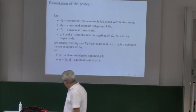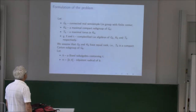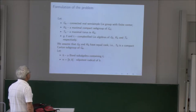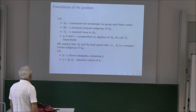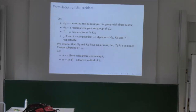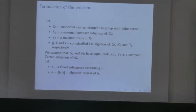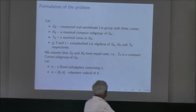Let me start by explaining the notation. For me, G-naught will be a connected real semi-simple Lie group with finite center, and K-naught is the maximal compact subgroup of G-naught. K-naught will be fixed for us. And G, K, and P will be the complexified Lie algebras of G-naught, K-naught, and K-naught. I assume that G-naught and K-naught have equal rank.